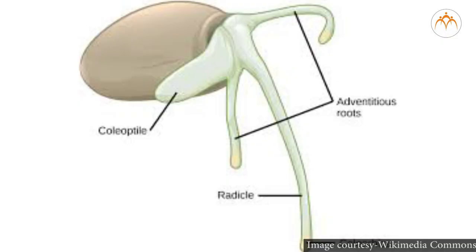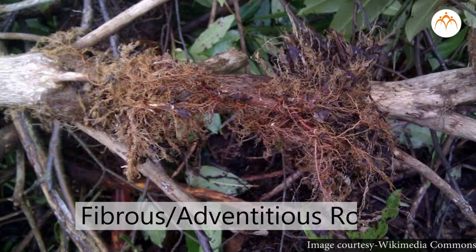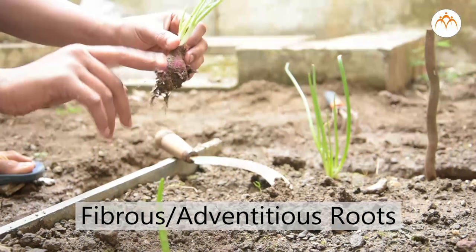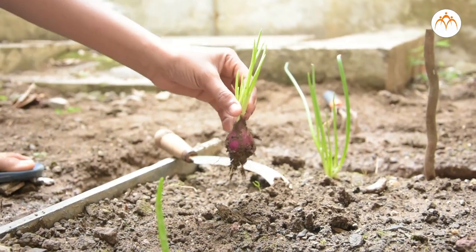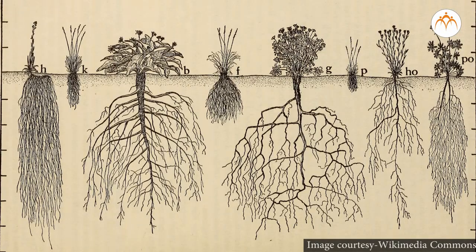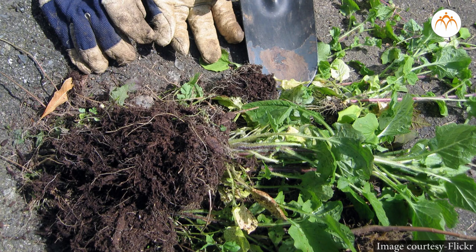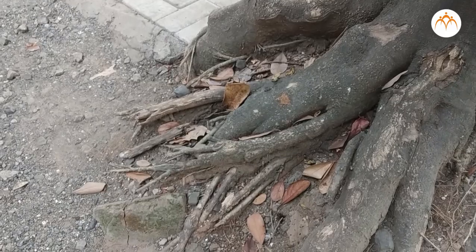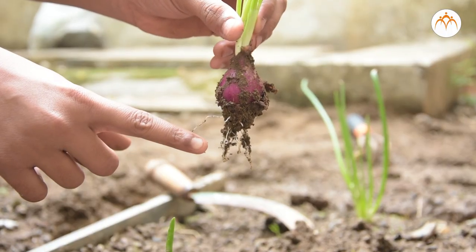Now let us study roots of grass or onion. In these plants, the radicle has a short life. Very soon the radicle develops into a bunch of small roots — this is called the fibrous or adventitious root system. Sometimes while working in the garden, you may have uprooted weeds. It is difficult to uproot old weeds as their roots grow deep in soil, but uprooting grass-like plants is easier because their roots are superficial. This is because tap roots grow deep in soil, whereas adventitious roots are superficial.